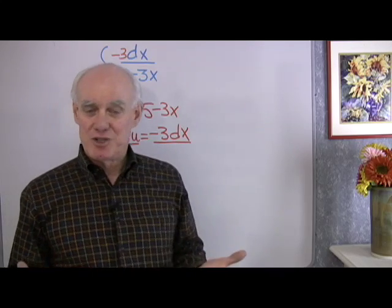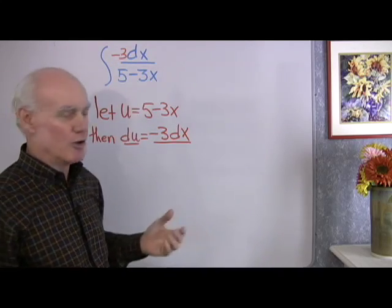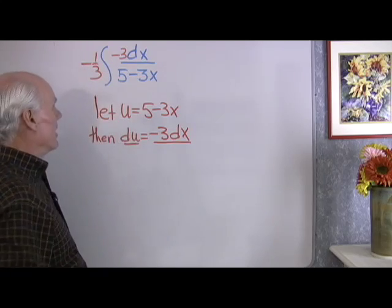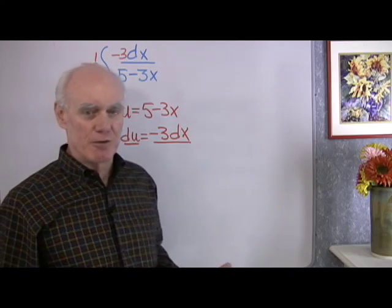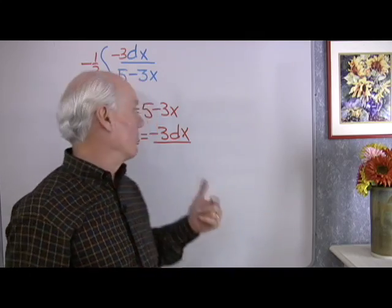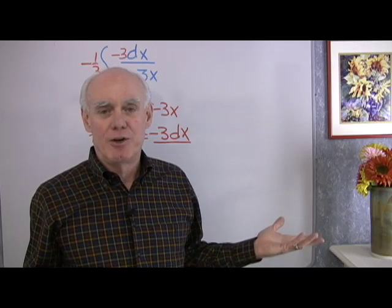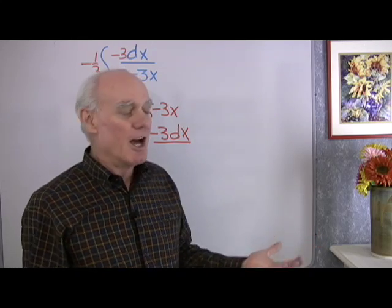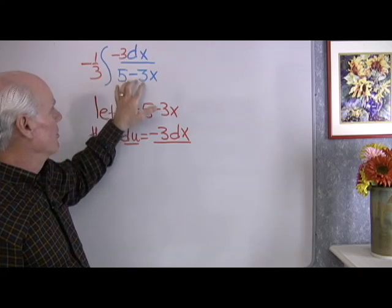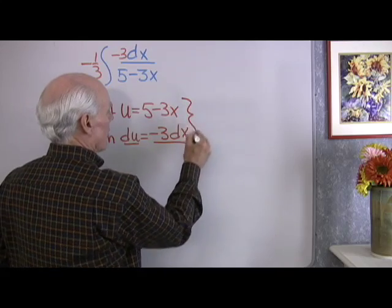Now, I want to make sure I don't change the value of this integral, so at the same time that I put this negative 3 as a factor in the numerator, I'm also going to multiply by a constant factor of negative 1 third on the outside of the integral. Remember, constant factors can cross back and forth over that integral symbol, so really what I've done right here is multiplied the whole thing by 1. I know that's not going to change the value of anything, but for me it sets it up in the form of du over u so I can do that integration that I want to do.